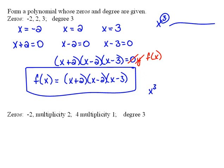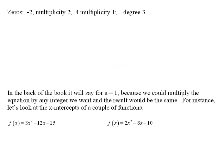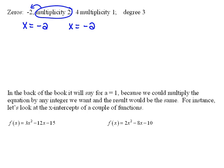For the next one, we have something a little bit different. It says we have a zero of negative 2 with multiplicity 2. This tells us how many times this zero occurs — we have an x-value of negative 2 that happens twice. And then we have a zero of 4 with multiplicity 1, meaning the x-value of 4 happens only one time.